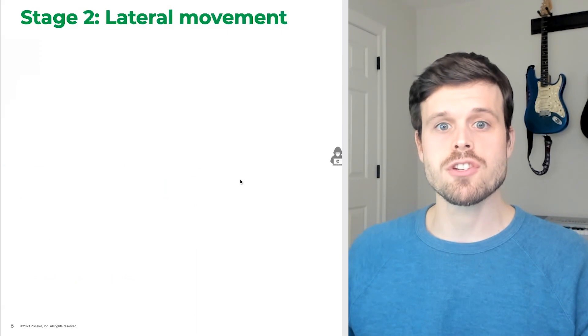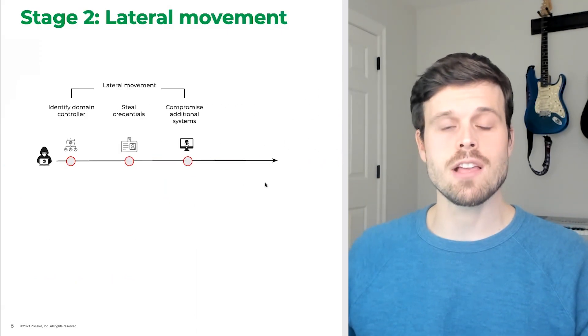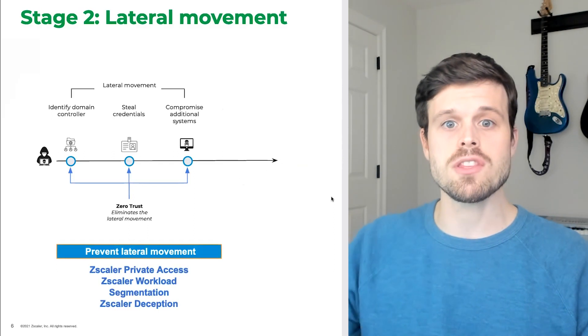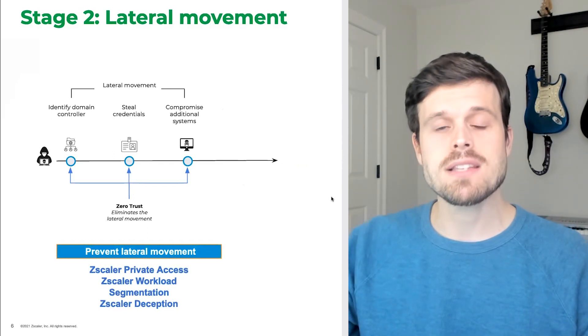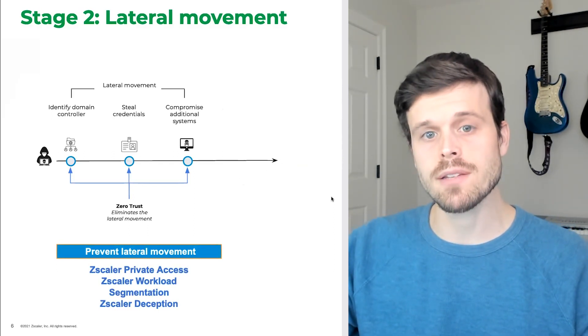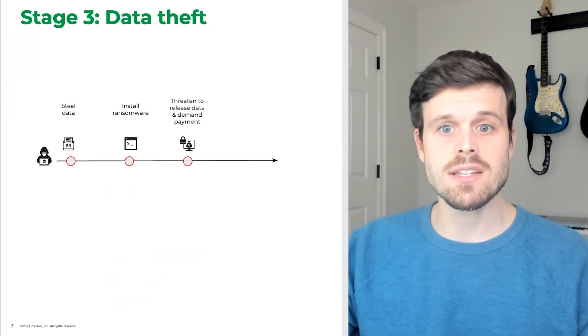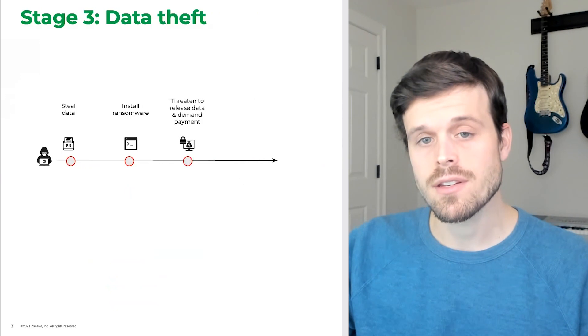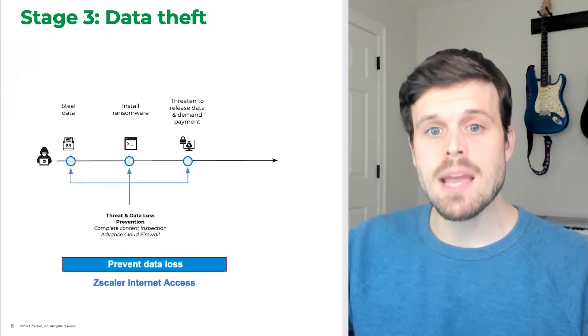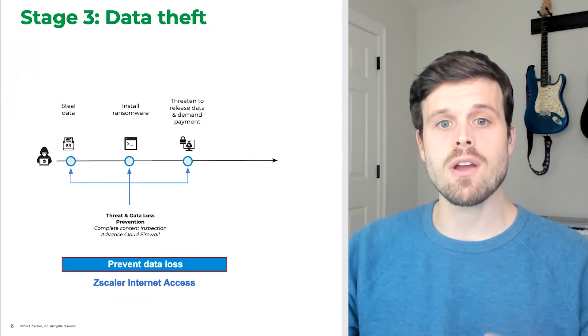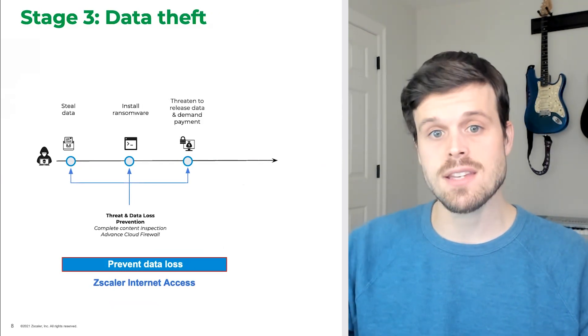Next, attackers move throughout your network to escalate their privileges and access your valuable data. A zero trust network architecture can mitigate damage at this stage by stopping attackers from moving laterally. Then attackers will exfiltrate any data that they plan to steal before encrypting your files. CASB and DLP capabilities identify vulnerable data and inspect outgoing traffic to make sure that your assets stay safe.